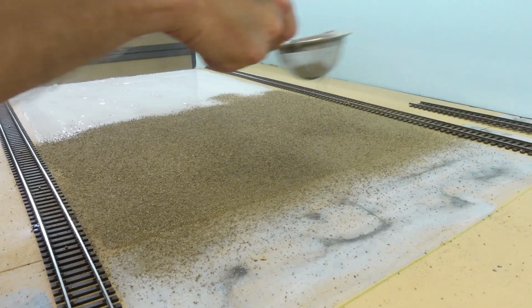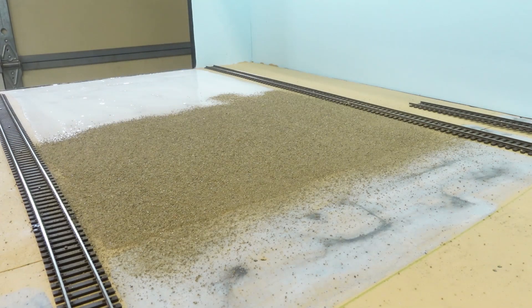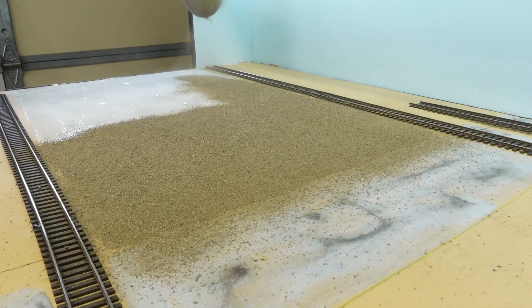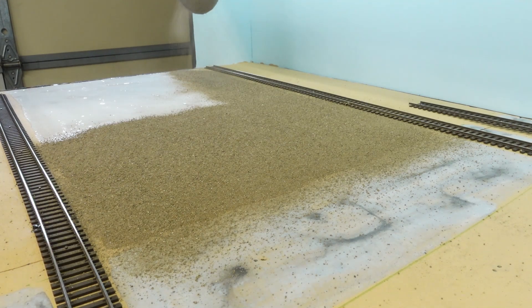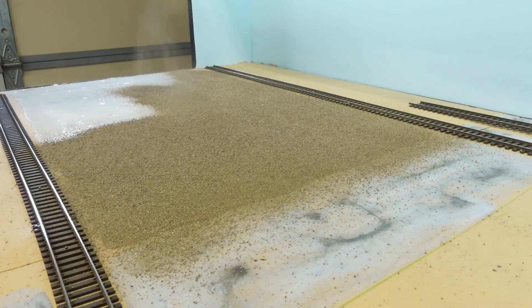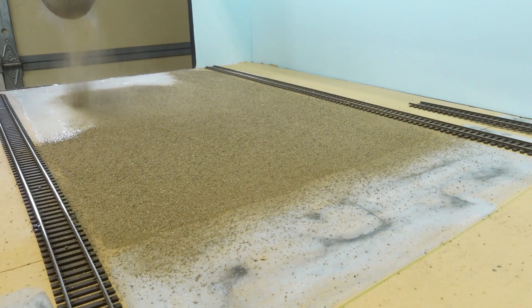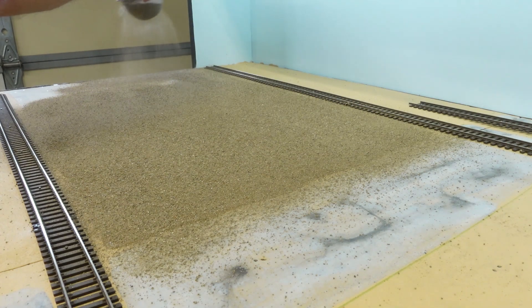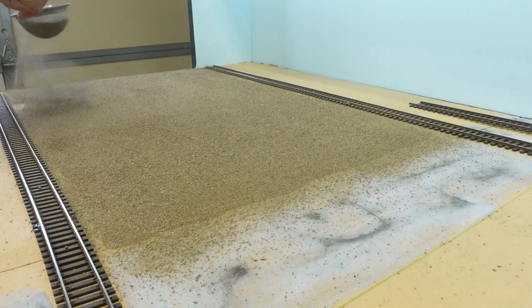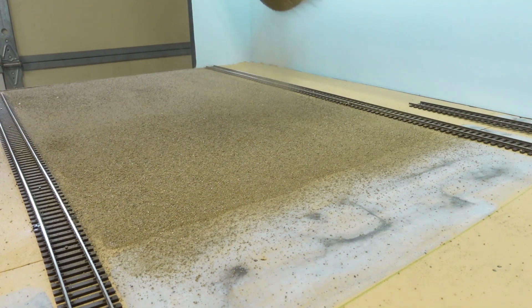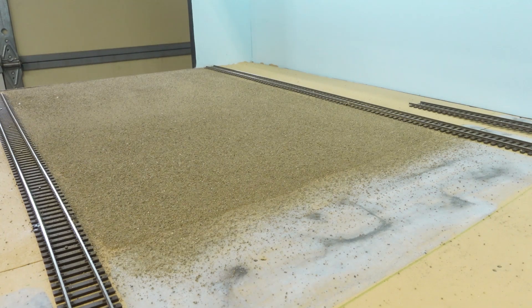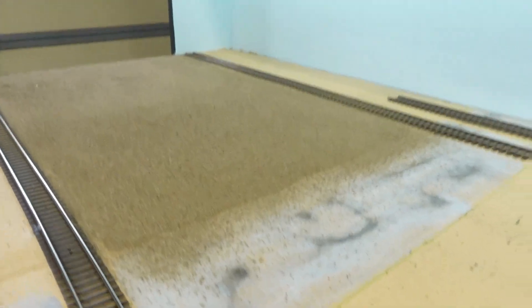And then once this is dry, give it like a day or so, you come back with your shop vac and put a little sock or something on the end of the shop vac and then scoop it all up so you can kind of reuse some of this dirt because it's going to come up. All right, dusty - you might even want to wear a mask for this.